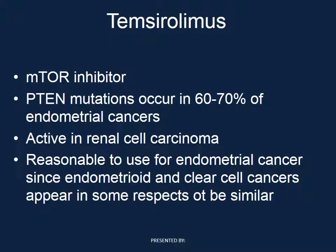An inhibitor of mTOR, other than metformin, is something called temsirolimus. It is an mTOR inhibitor and inhibits the pathway caused by PTEN mutations, which occur in 60 to 70% of endometrial cancers. It seems reasonable to try in endometrial cancers because it's also active in renal cell cancer, which shares many mutations with endometrial cancer and is histologically similar.